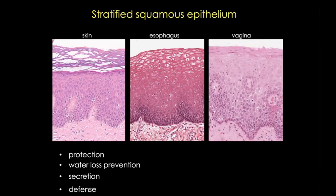To review, stratified squamous epithelium is found throughout the body: in the epidermis of skin, the cornea, the mouth, the larynx, esophagus, vagina, and anal canal. These are generally lining epithelia whose functions include protection from physical or chemical insults and microorganisms, water loss prevention, and often defense. Let's look at some of the characteristics of this tissue, using the esophagus as an example.